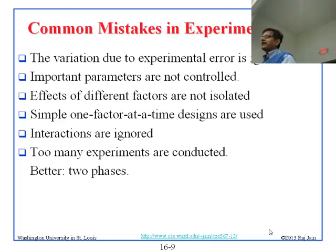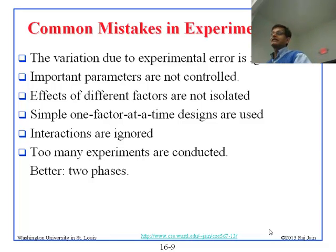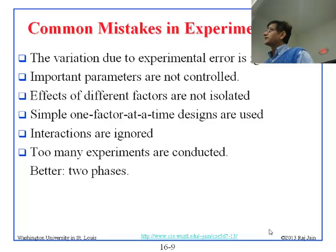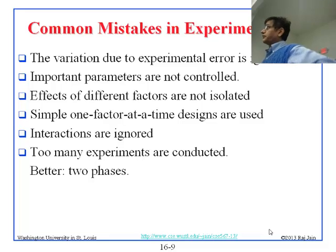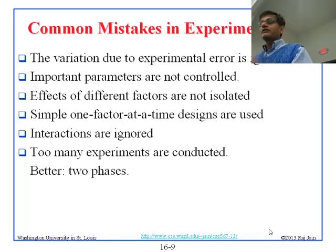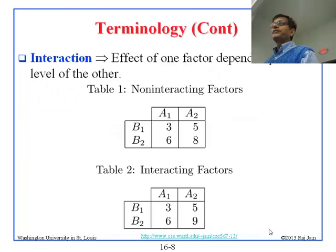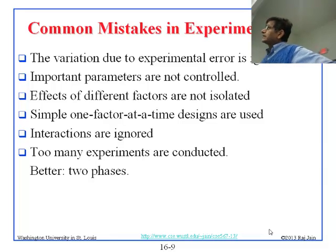So now we will figure out how to estimate the interaction too. These are the common mistakes people make if they do experiments without this knowledge. First, variation due to experimental errors is ignored. Second, important parameters are not controlled — something that can affect the performance is totally left uncontrolled. Third, effects of different factors are not isolated. People will just show four graphs and feel they have done their job, but they have not really isolated the effect.